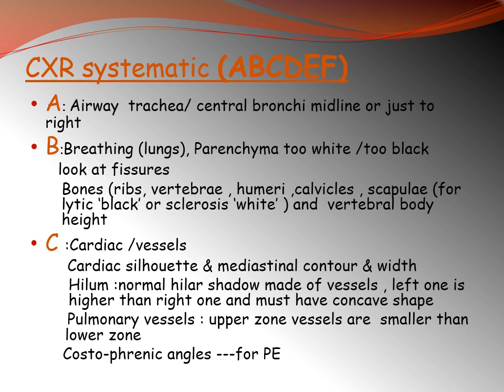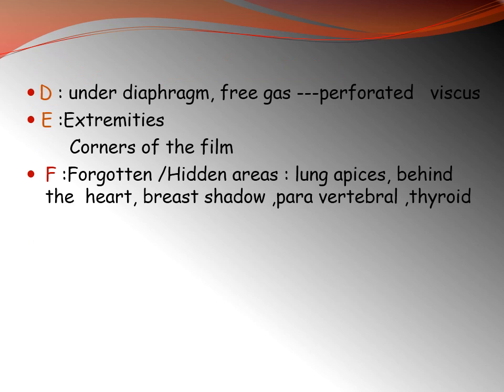C is for cardiac and vessels. Assess the cardiac silhouette, the mediastinal contour, and the hila. The normal hilar shadow is made of vessels, with the left hilum higher than the right, and both must have a concave shape. Pulmonary vessels in the upper zone should be smaller than those in the lower zone. Check the costophrenic angles. D is for diaphragm — you should also look below the diaphragm for free gas if there is a perforated viscus. You are not just looking at an image; you are assessing the whole patient.